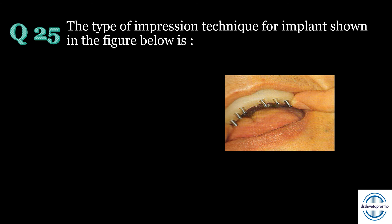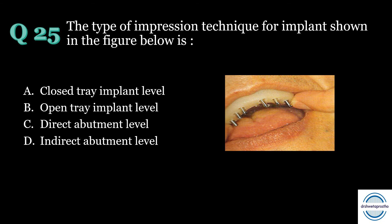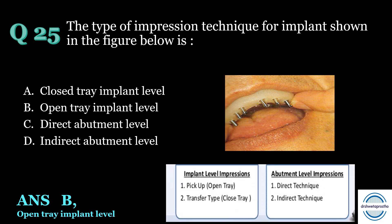Question number twenty-five: The type of impression technique for the dental implant shown is — A) closed tray implant level, B) open tray implant level, C) direct abutment level, or D) indirect abutment level? The answer is B — open tray implant level. Impressions for dental implants can be at implant level or abutment level. Implant level can be open tray (pickup) or closed tray (transfer). Abutment level can be direct or indirect. This picture shows an open tray technique, visible from the holes, mainly used when multiple implants are placed with different angulations.